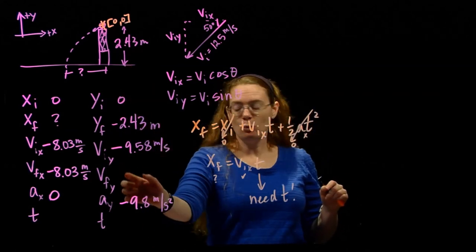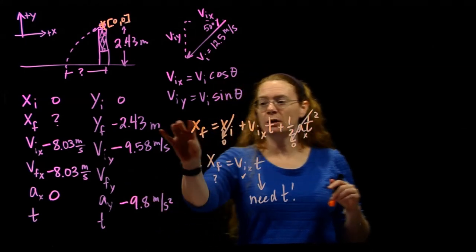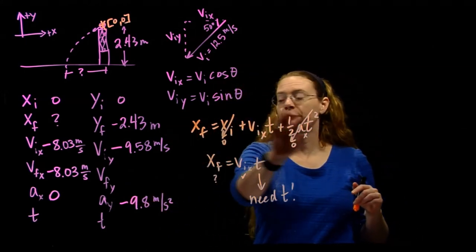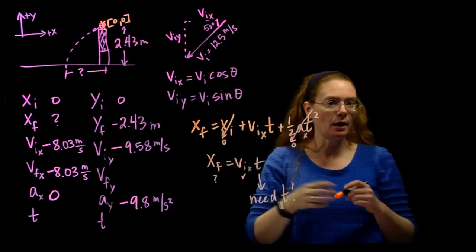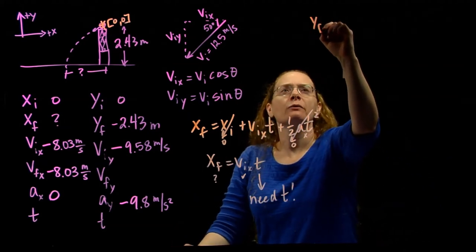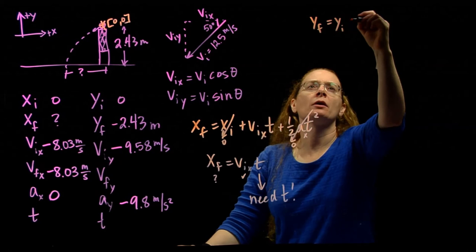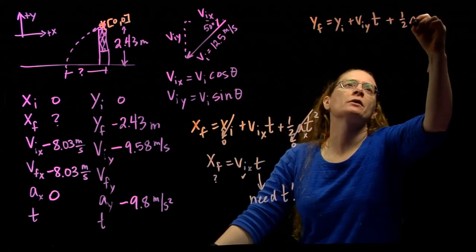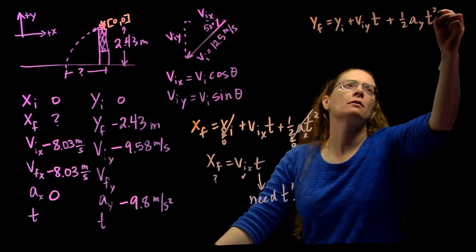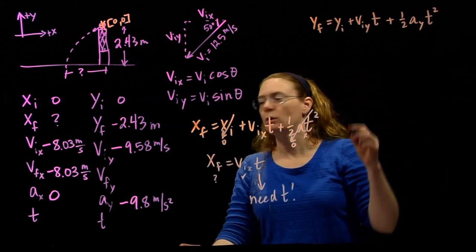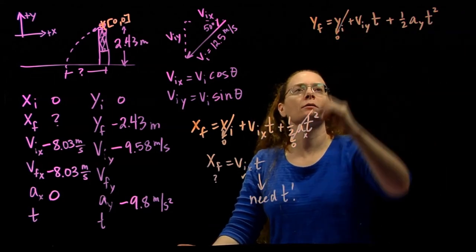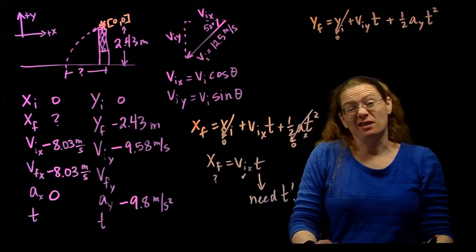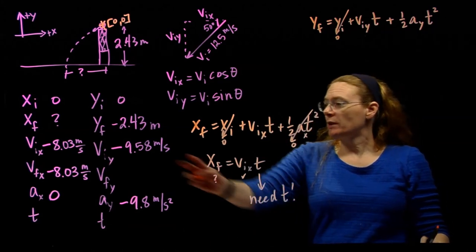I don't have v final y, so I'm going to use this equation in the vertical direction, because that's the only equation I have that doesn't have v final. So y final equals y initial plus v initial y t plus 1 half acceleration in the y direction t squared. Is anything 0? Yes. That's 0. Doesn't leave me much. Okay.